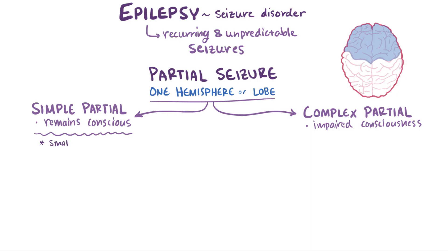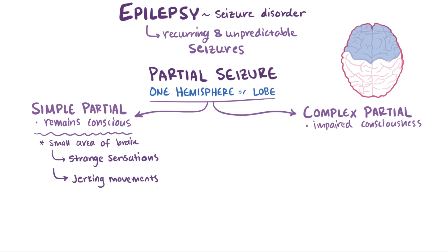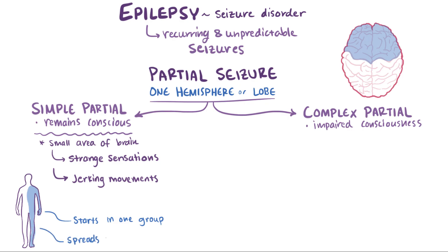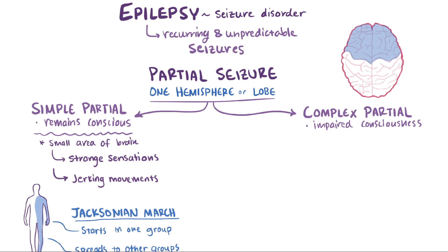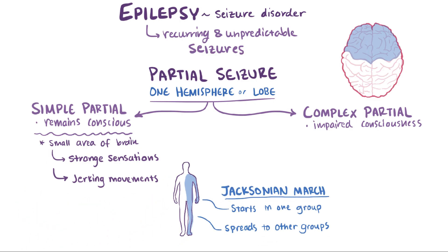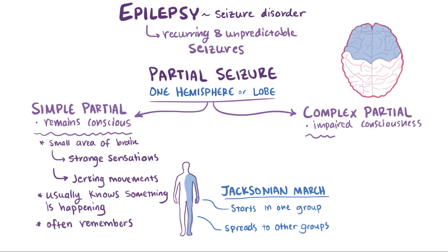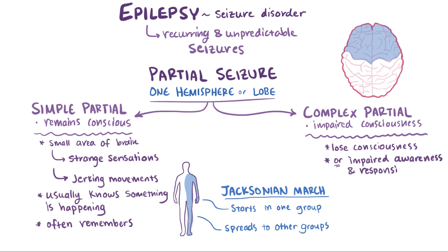Simple partial seizures typically affect a small area of the brain and can involve strange sensations like hearing or tasting something, but can also involve jerking movements in specific muscle groups. If the jerking activity starts in a specific muscle group and spreads to surrounding muscle groups as more neurons are affected, it's referred to as a Jacksonian march. The person is typically conscious and will usually know that something's happening and remember the seizure afterwards. Complex partial seizures, on the other hand, involve losing consciousness completely or having impaired awareness and responsiveness, so they might not remember exactly what happened.